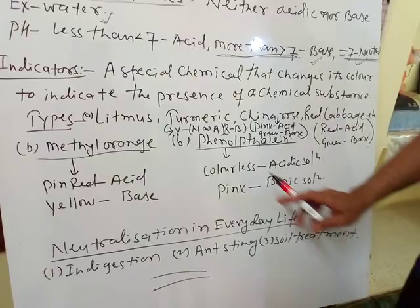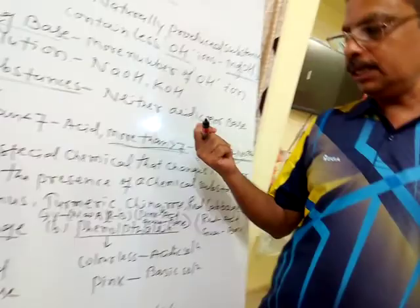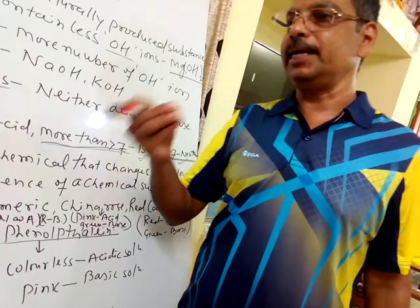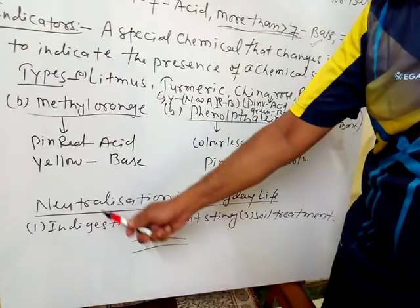Now we will discuss the neutralization process. In our everyday life, when we feel acidity in our body and pain in our stomach, we take some antacid like Digene or Eno. Digene or Eno is a base, and when we take it, we get relief. So we take antacid to neutralize the effect of acid in our body.